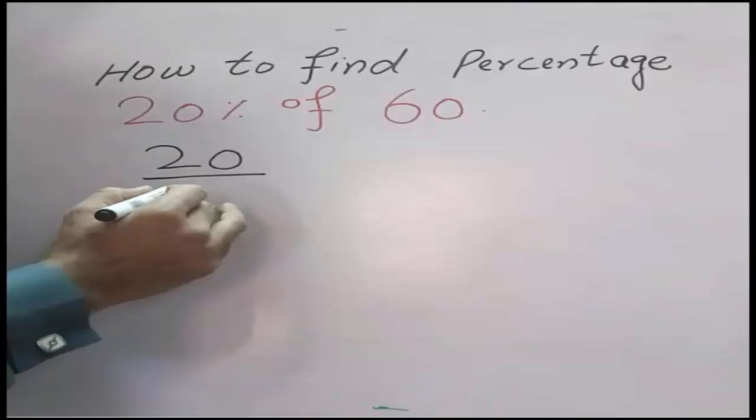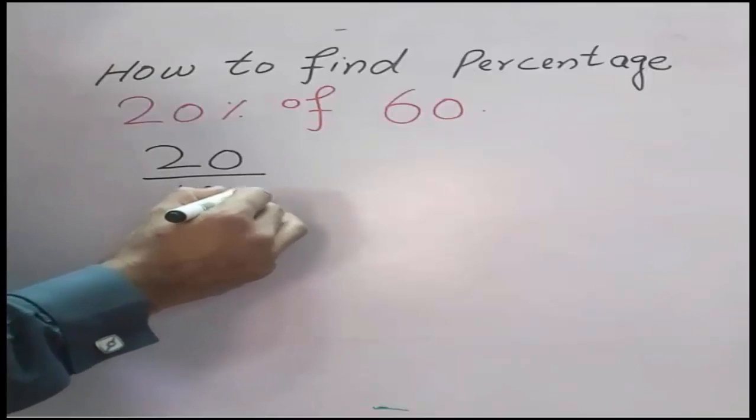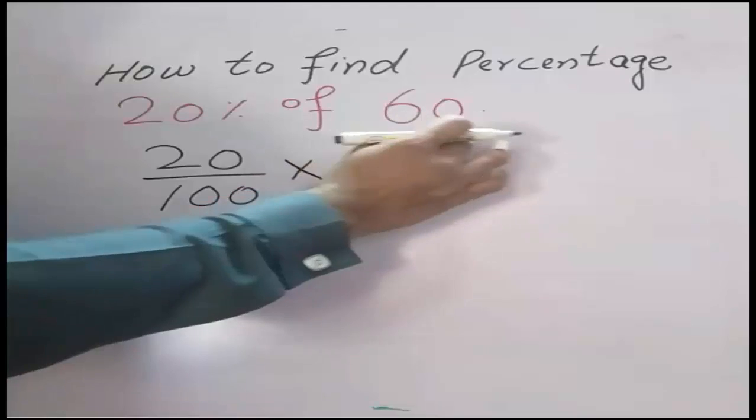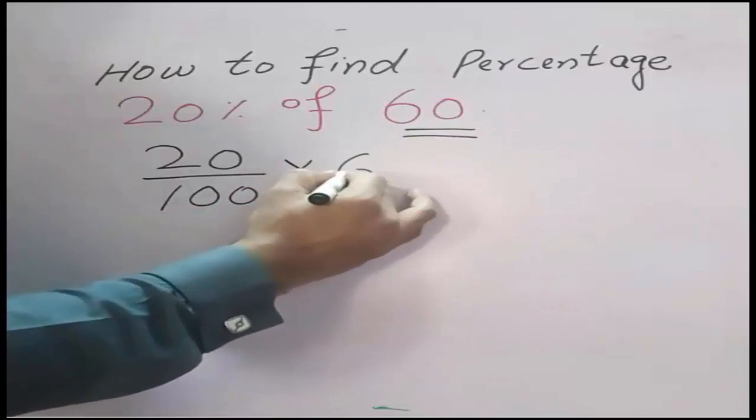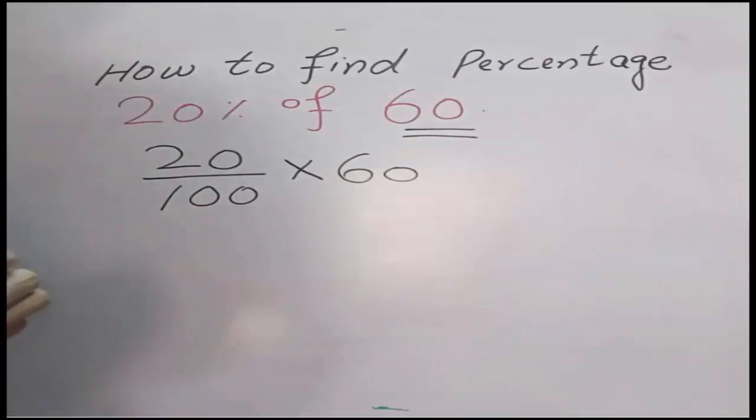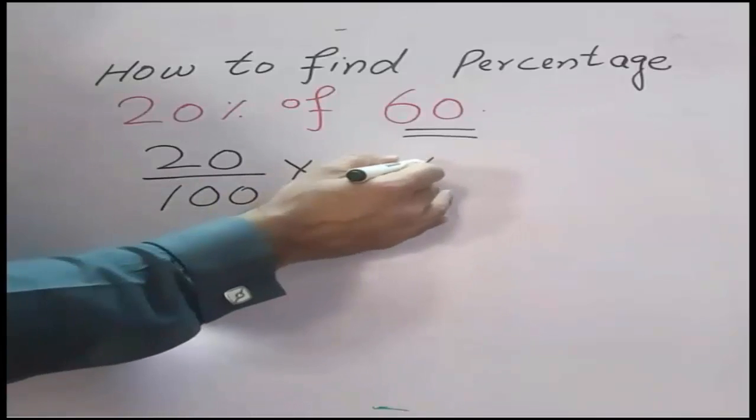After removing this percentage sign, 100 would be placed over here. Now multiply this 60. Now cut off, cut this 0 with this 0 and this 0 with this 0.